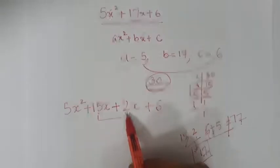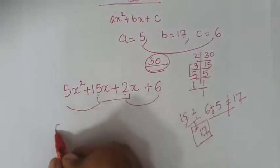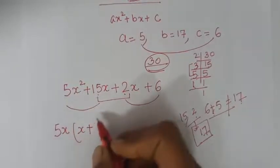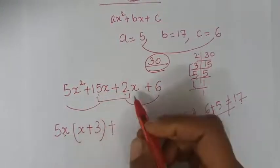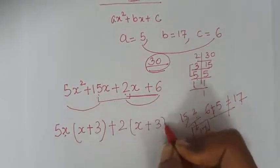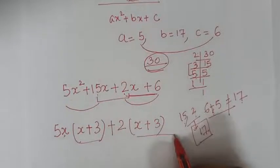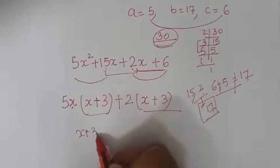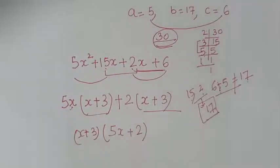Now again take two terms at a time. From 5x² + 15x: 5 is common, x is common, so 5x(x + 3). From 2x + 6: 2 is common, so 2(x + 3). These two brackets are the same — (x + 3) — so take (x + 3) as common. What is left? (5x + 2). So the factorization is (x + 3)(5x + 2). Clear, children?